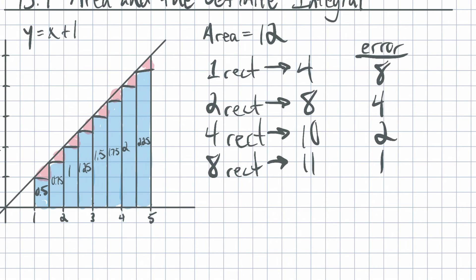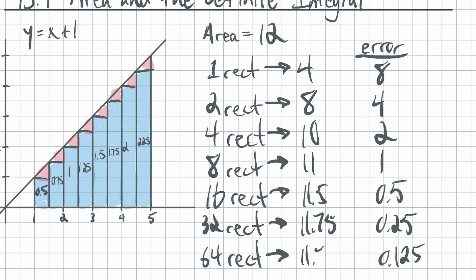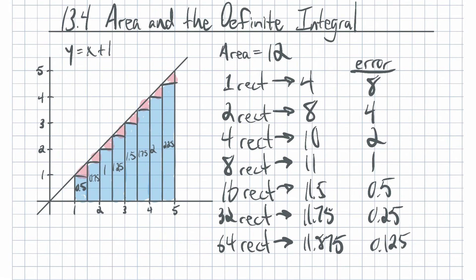What if I doubled the number of rectangles to 16? I would be off by half a unit, so I'd get 11.5. What if I doubled to 32? I'd be off by a quarter unit, getting 11.75. With 64 rectangles, I'd be off by one eighth—0.125—so I'd get 11.875, and so forth. If I increase the number of rectangles, I decrease the error and can get a very good estimate using only rectangles.